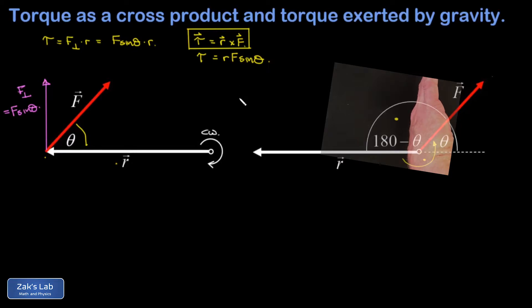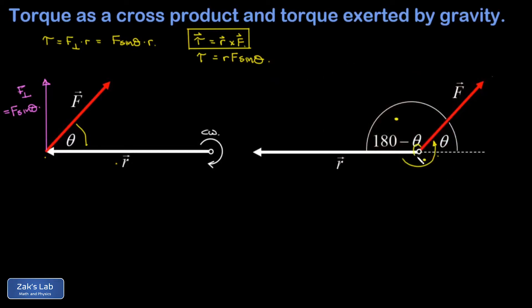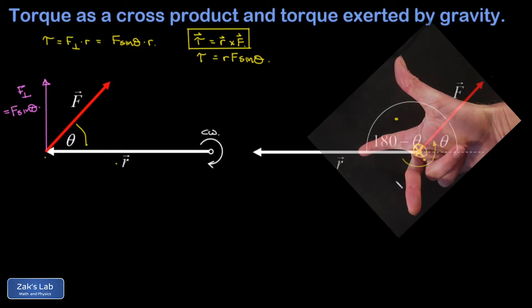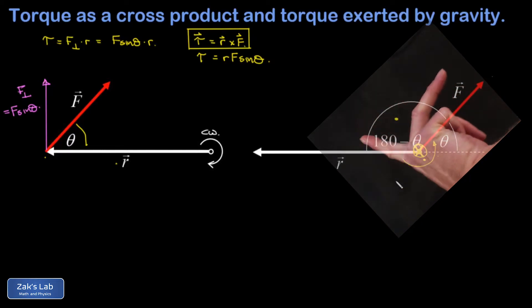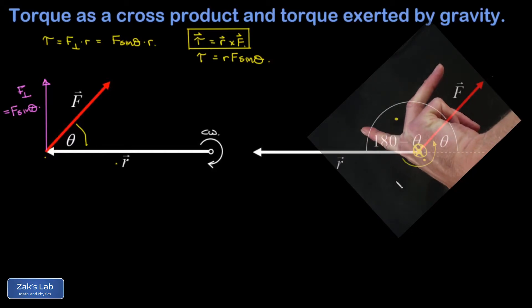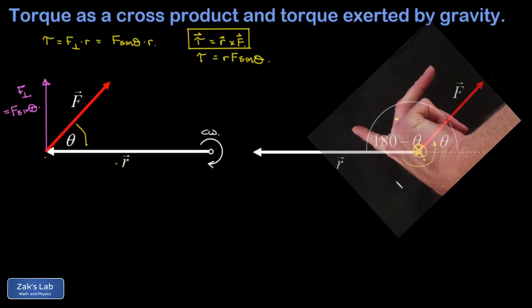Into the page is normally given by a circle with an x in it, representing the tail feathers of a vector pointing into the page. A second popular way to visualize the right-hand rule is to put your index finger in the direction of the first vector r, and your middle finger in the direction of the second vector f.